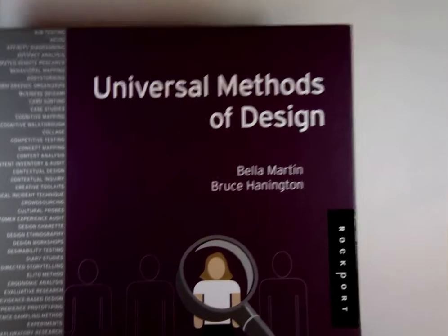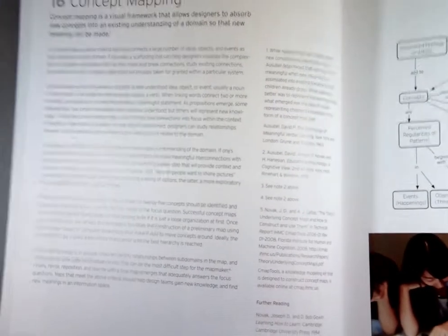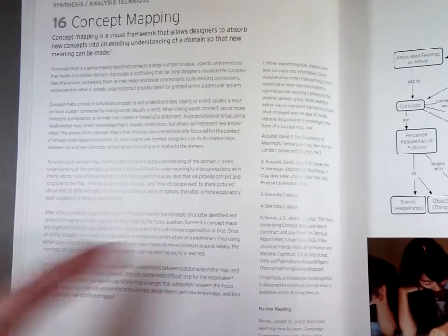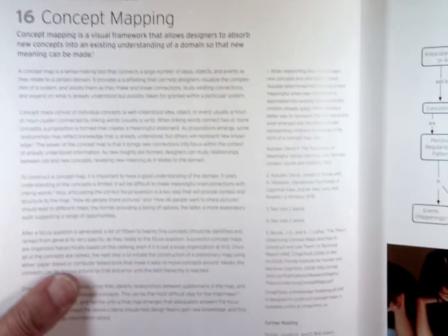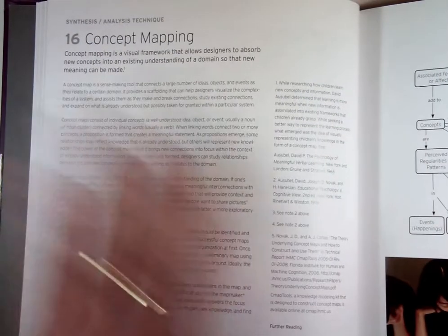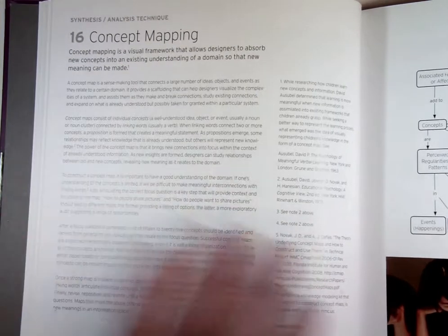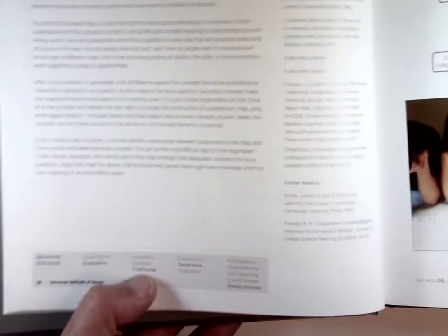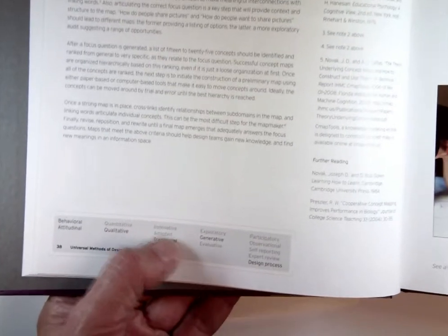This happens to be a page on concept maps in a book called Universal Methods of Design, which is actually a good book, except for the fact that the typography sucks because it's totally light — it's just way too light. Whatever this font is, it doesn't work the way they're using it. It's too light, and it's not black, and the gray value of the page is just too light overall. The type at the bottom here is a list of words, and some of them are highlighted in black, and some of them are left in gray.